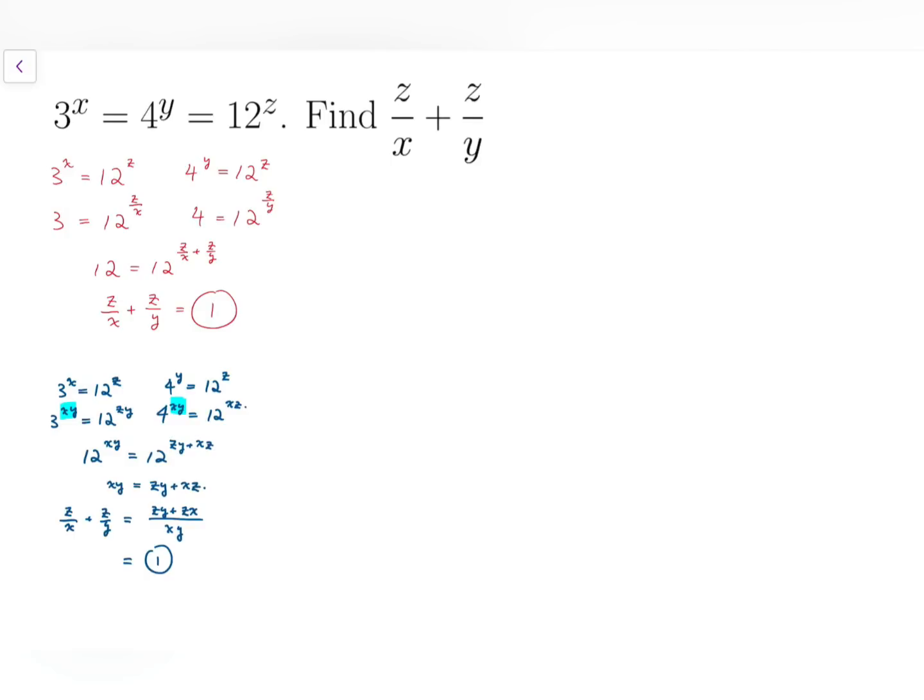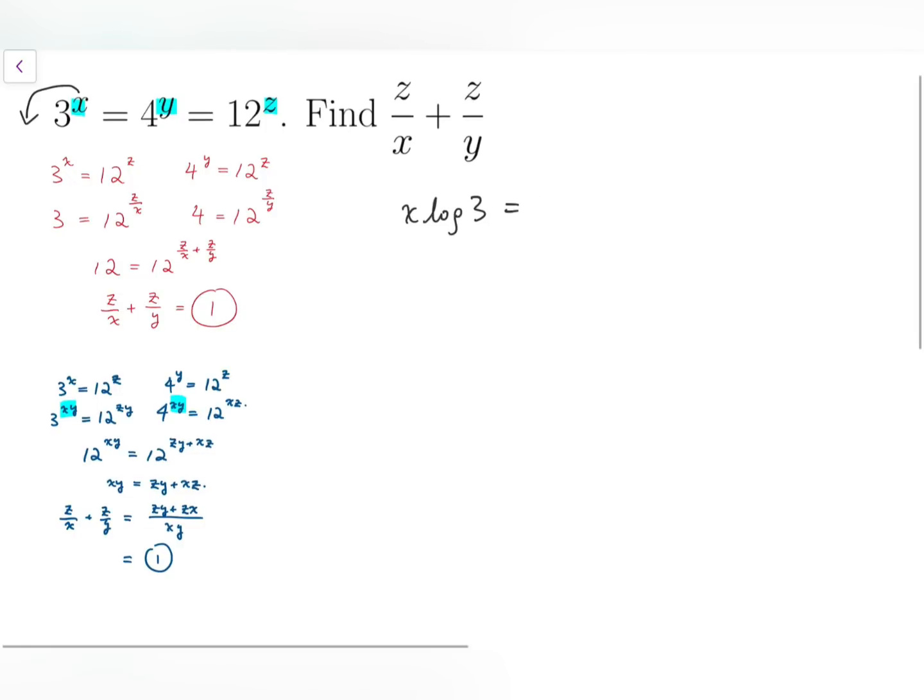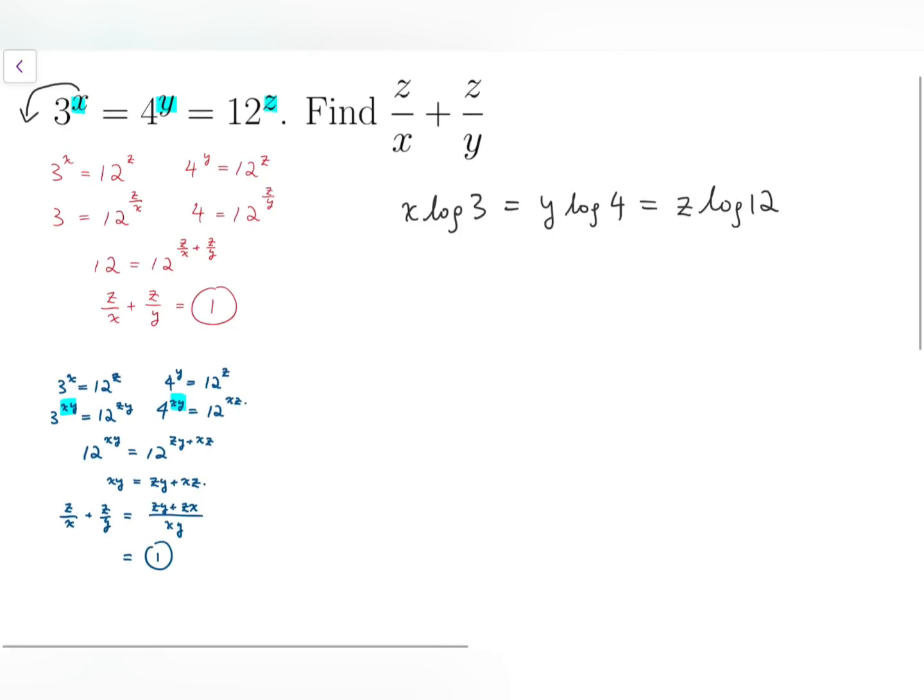Our third approach is to use logarithms. So, taking logarithms on all three powers, we have x times log 3, because the index part, x, y, and z, can be moved outside of the logarithm. So, x log 3 equals y times log 4 equals z times log 12.